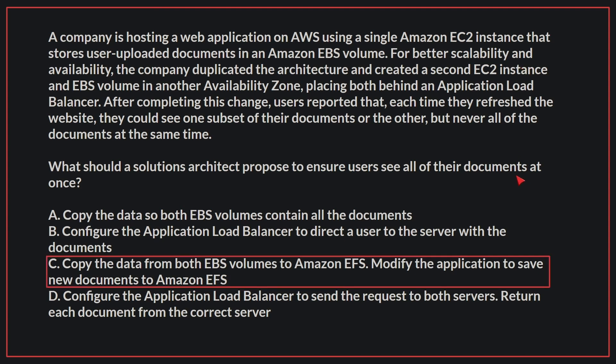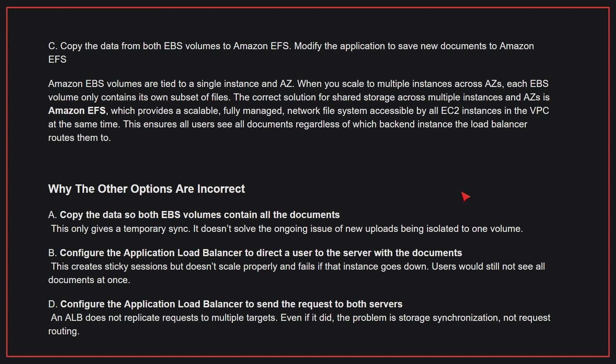The correct answer is C: Copy the data from both EBS volumes to Amazon EFS, and modify the application to save new documents to Amazon EFS. Amazon EBS volumes are tied to a single instance and AZ. When you scale to multiple instances across AZs, each EBS volume only contains its own subset of files. Amazon EFS provides a scalable, fully managed network file system accessible by all EC2 instances in the VPC at the same time, ensuring all users see all documents regardless of which backend instance the load balancer routes them to.